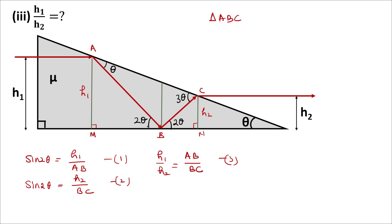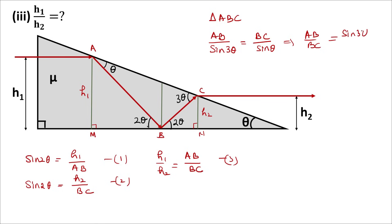By the sine rule, the ratio of a side to the sine of its opposite angle is the same for all sides. So AB/sin3θ = BC/sinθ, giving AB/BC = sin3θ/sinθ. Therefore h1/h2 = sin3θ/sinθ, and that is the demagnification ratio. Thank you.